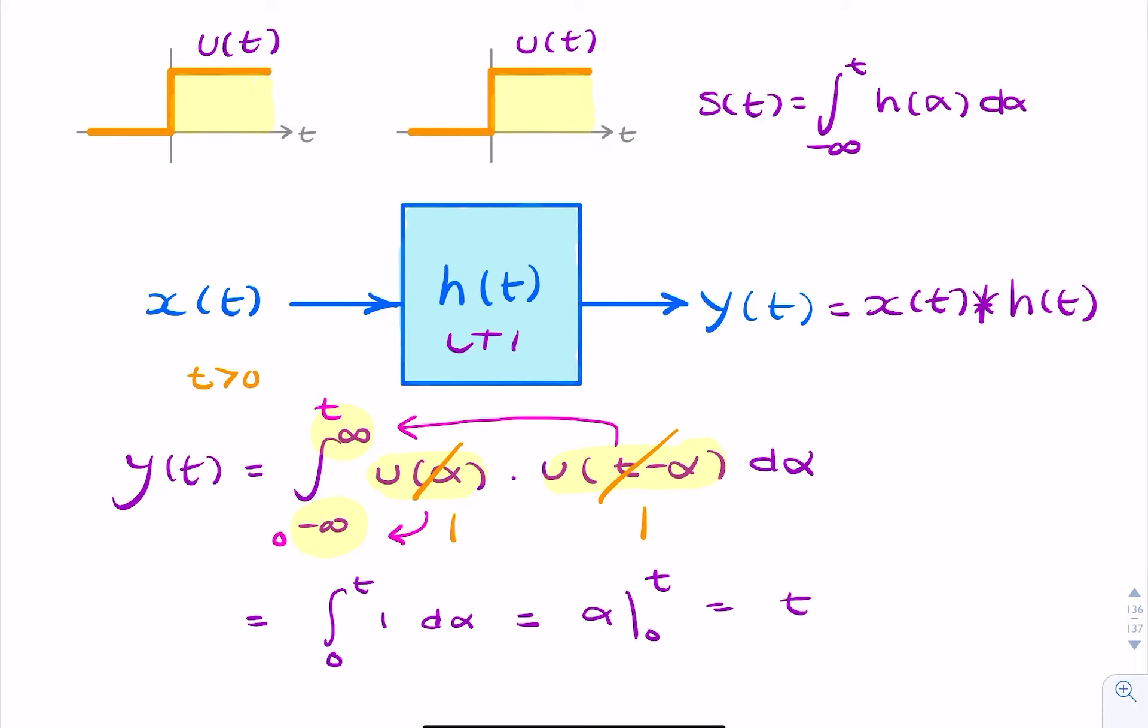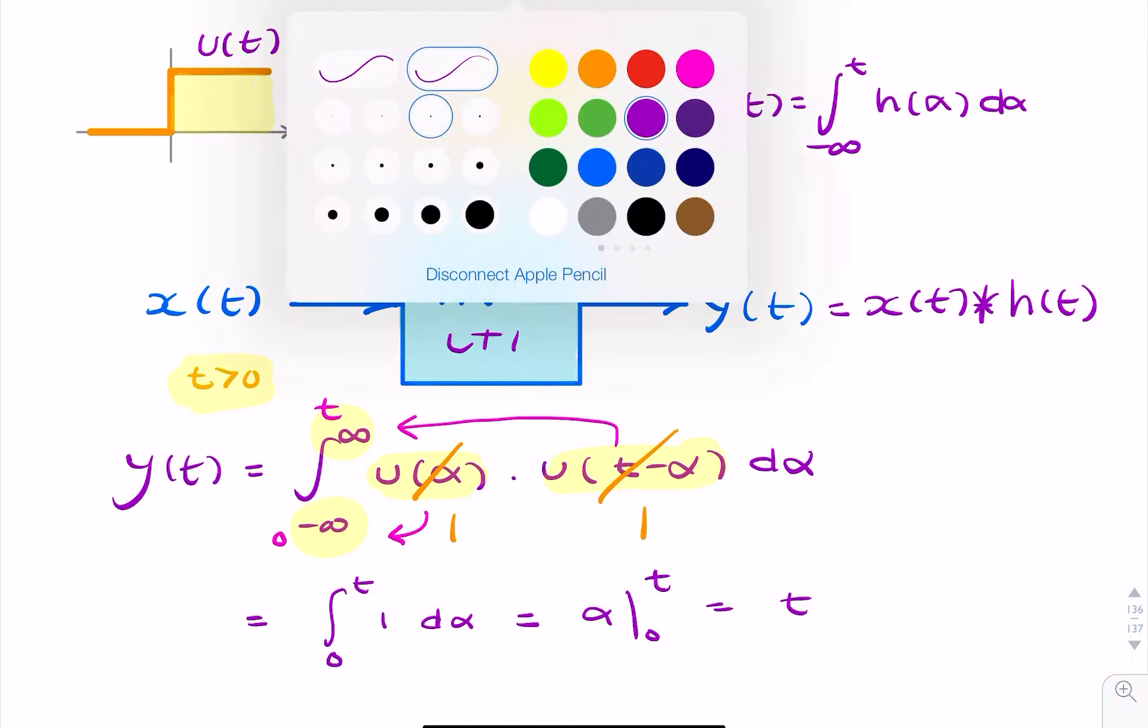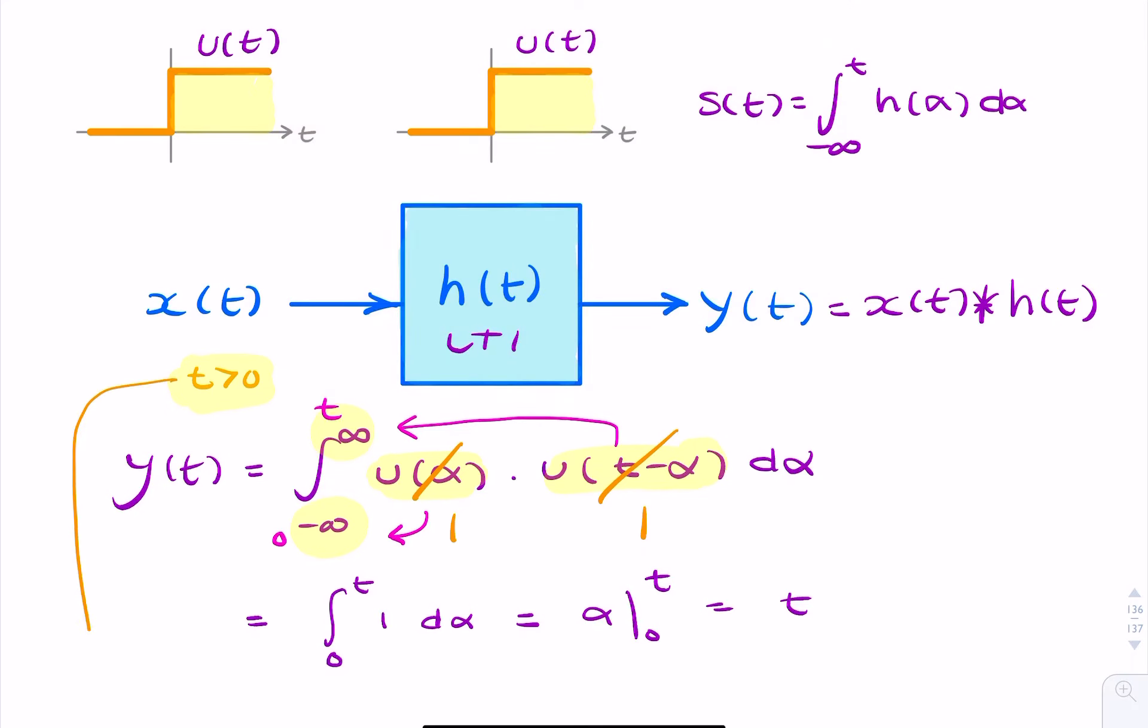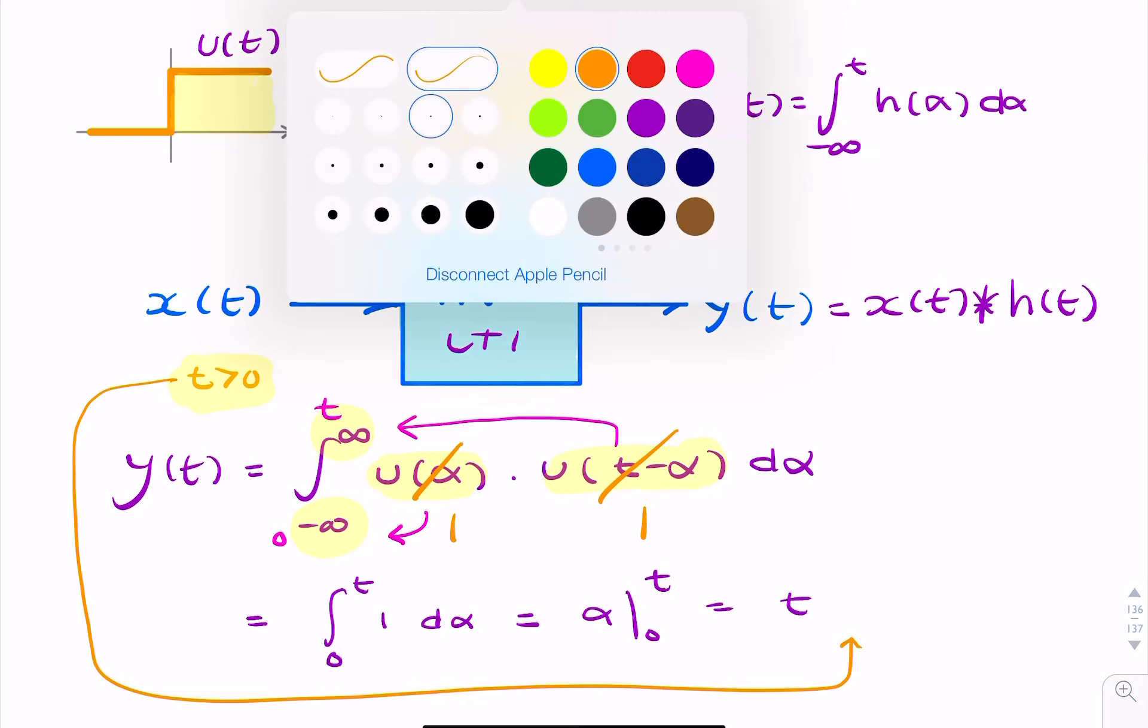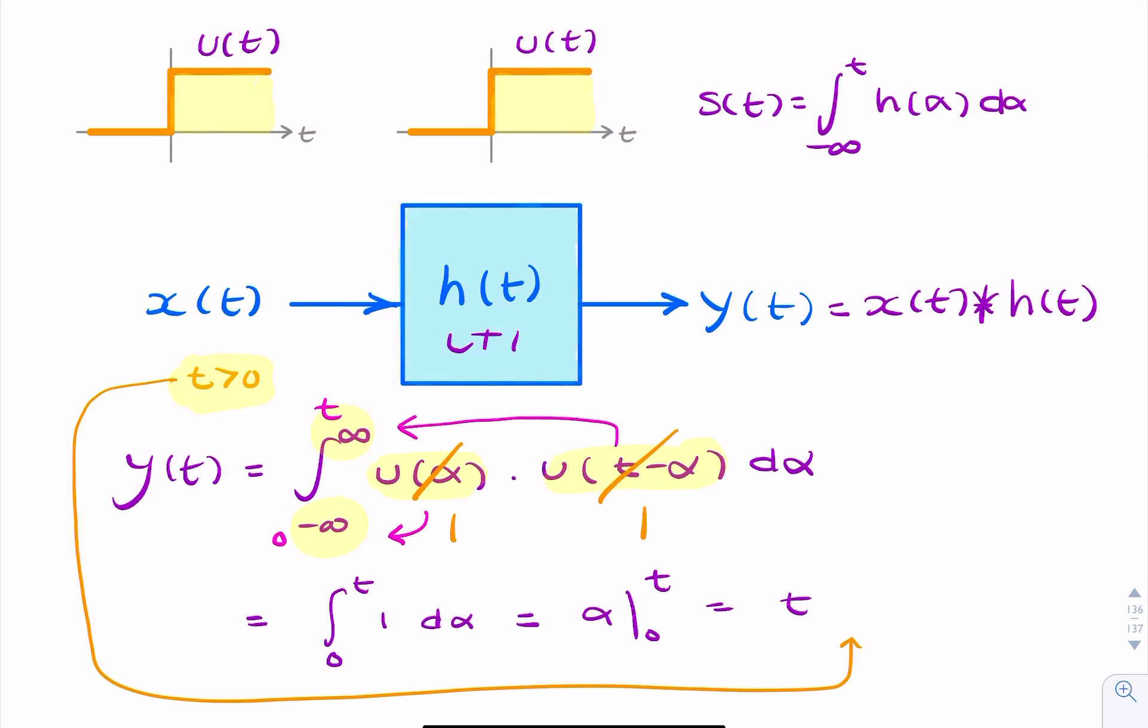But because we said that T has to be greater than 0, then we need to then multiply this result by U of T. So U of T is our way of saying that T has to be greater than 0 for this result to be non-zero.